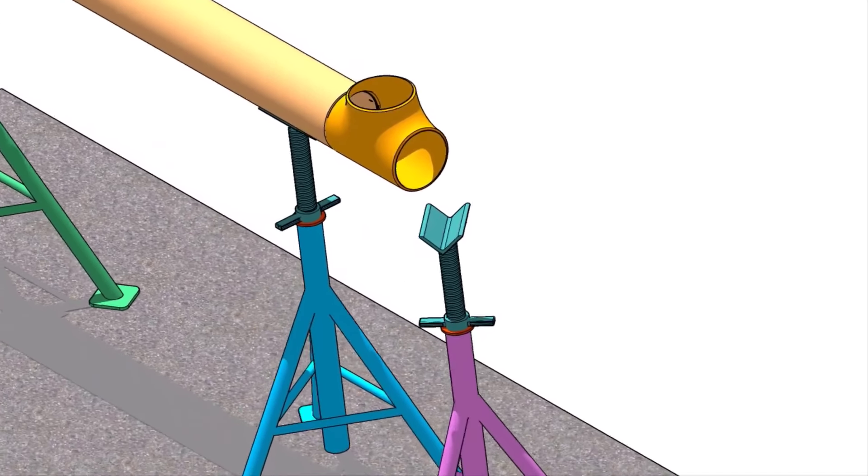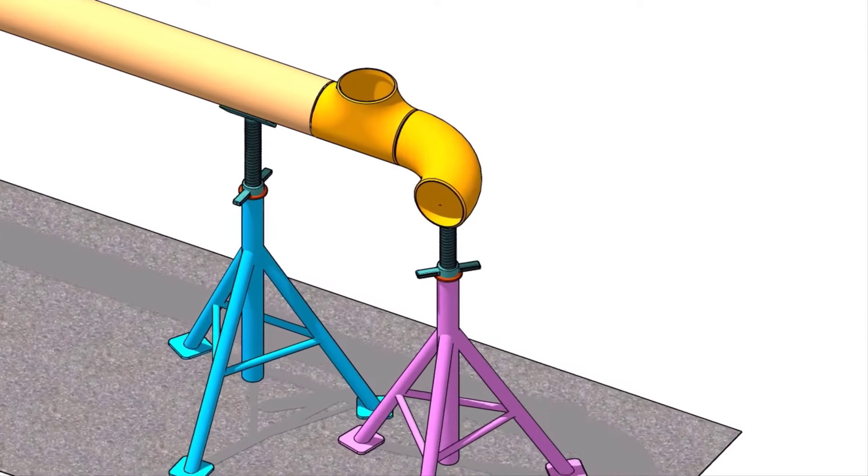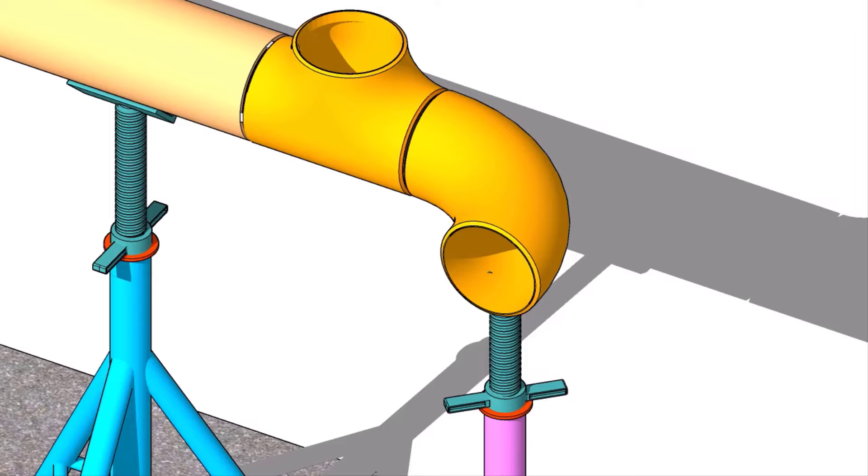Put an adjustable stand near the tee as shown. Put the elbow on the stand. Maintain the level. Put a gap rod in the joint and make sure the gap is equal all around.